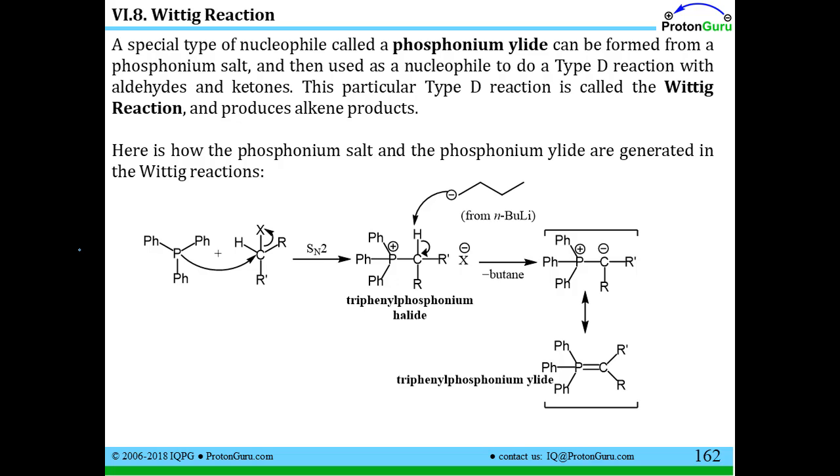Now a special type of nucleophile is used in this Wittig reaction, and it's called a phosphonium ylid. I'm going to show you how to generate this phosphonium ylid as part of this process. But once you have this special nucleophile, this is a type D reaction, which means you replace the entire carbonyl carbon. This phosphonium ylid is a carbon-centered nucleophile, and what you do is replace the CO double bond of the carbonyl with a CC double bond so that your product is an alkene.